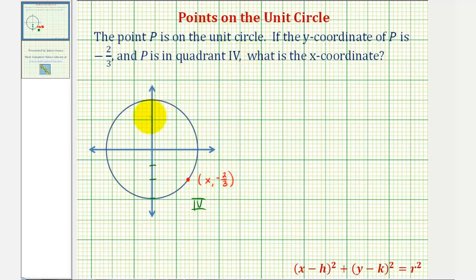Because we're talking about the unit circle, the center is at the origin with coordinates zero comma zero, which means H and K are both zero, and because we have the unit circle, the radius equals one. So the equation of the unit circle would just be x-squared plus y-squared equals one.